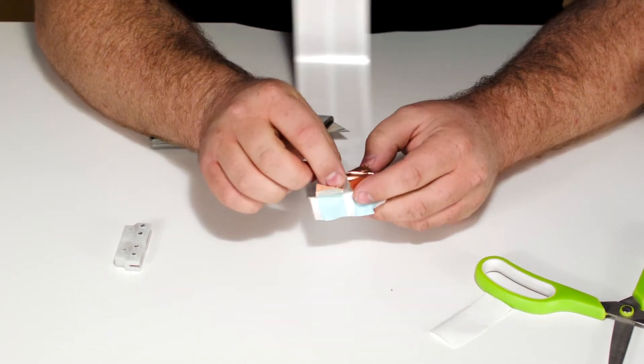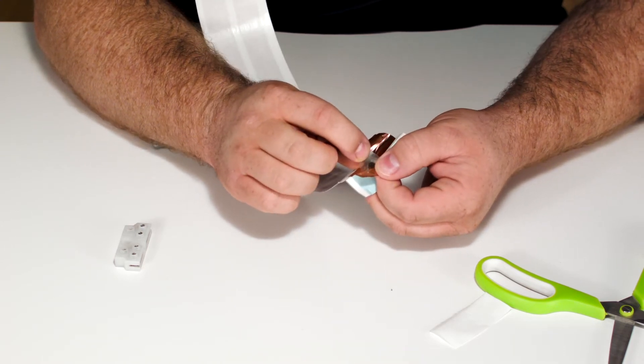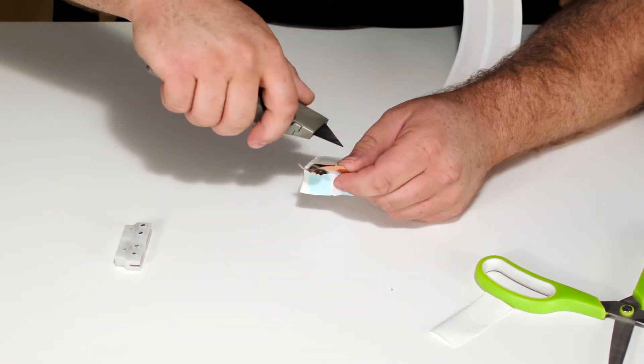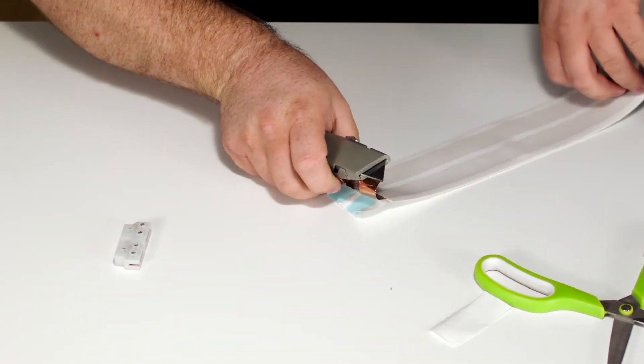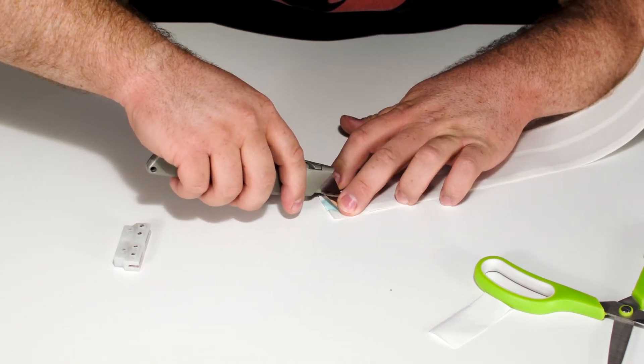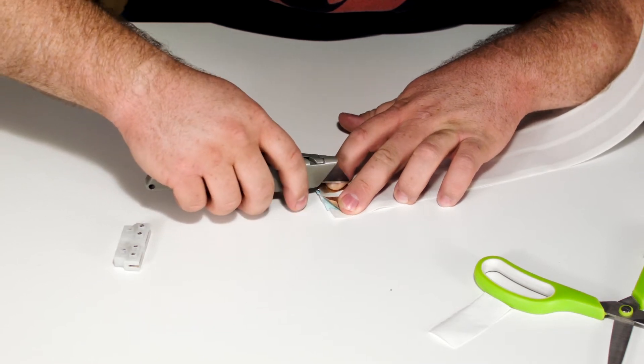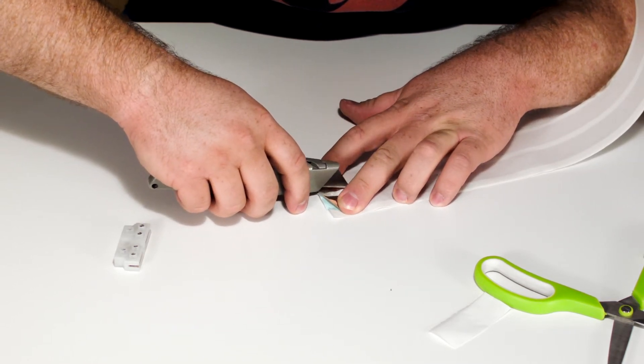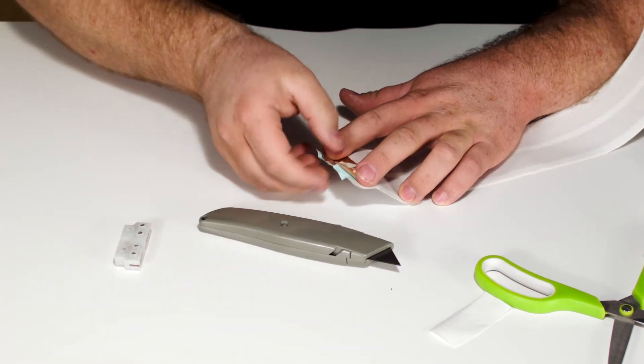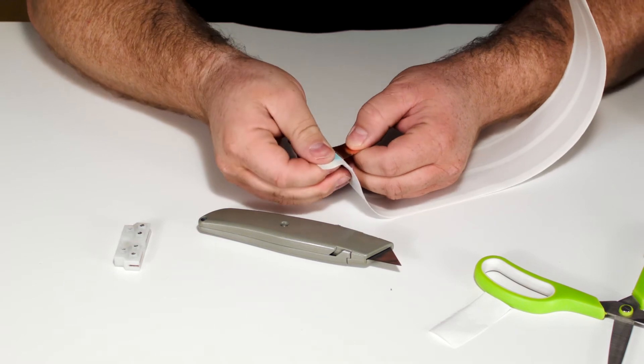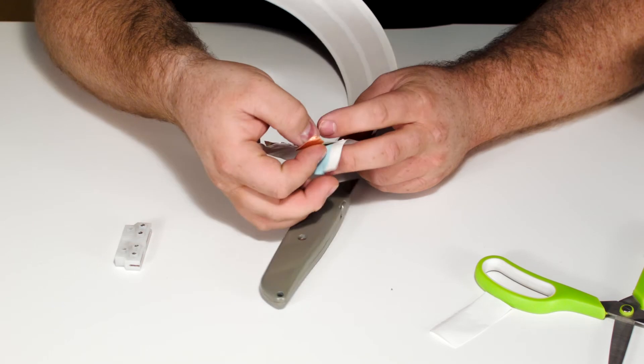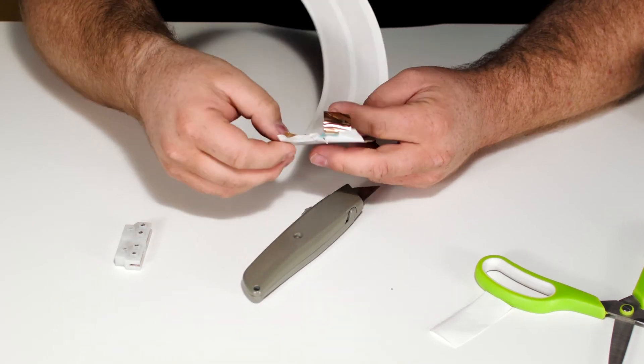At this point you can either peel off this adhesive layer, this clear adhesive layer, or since you're just going to fold it back onto itself, you can very lightly score it and just peel it separately. Just pull it away like that. For the terminal block, you can just leave that adhesive on it as it is.